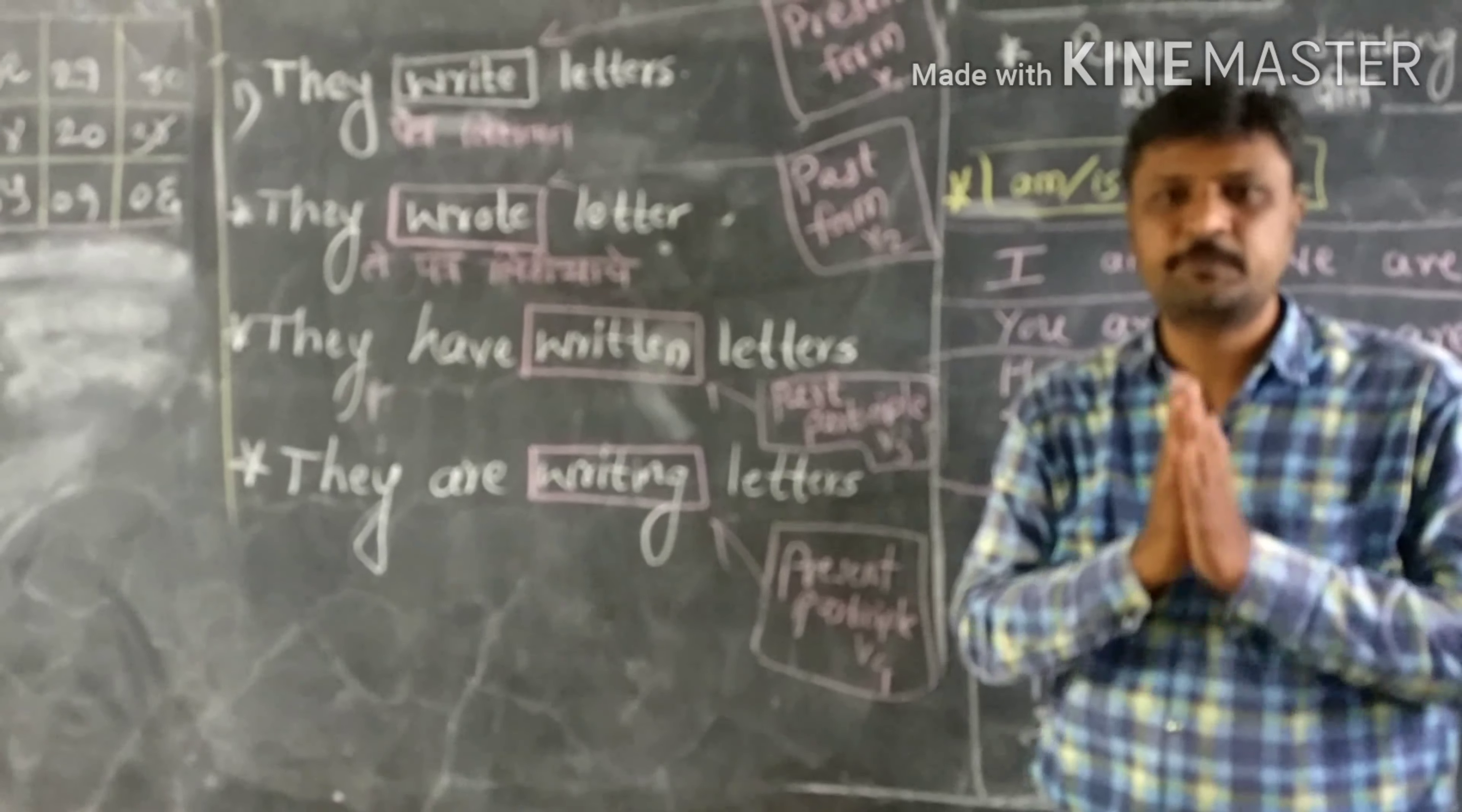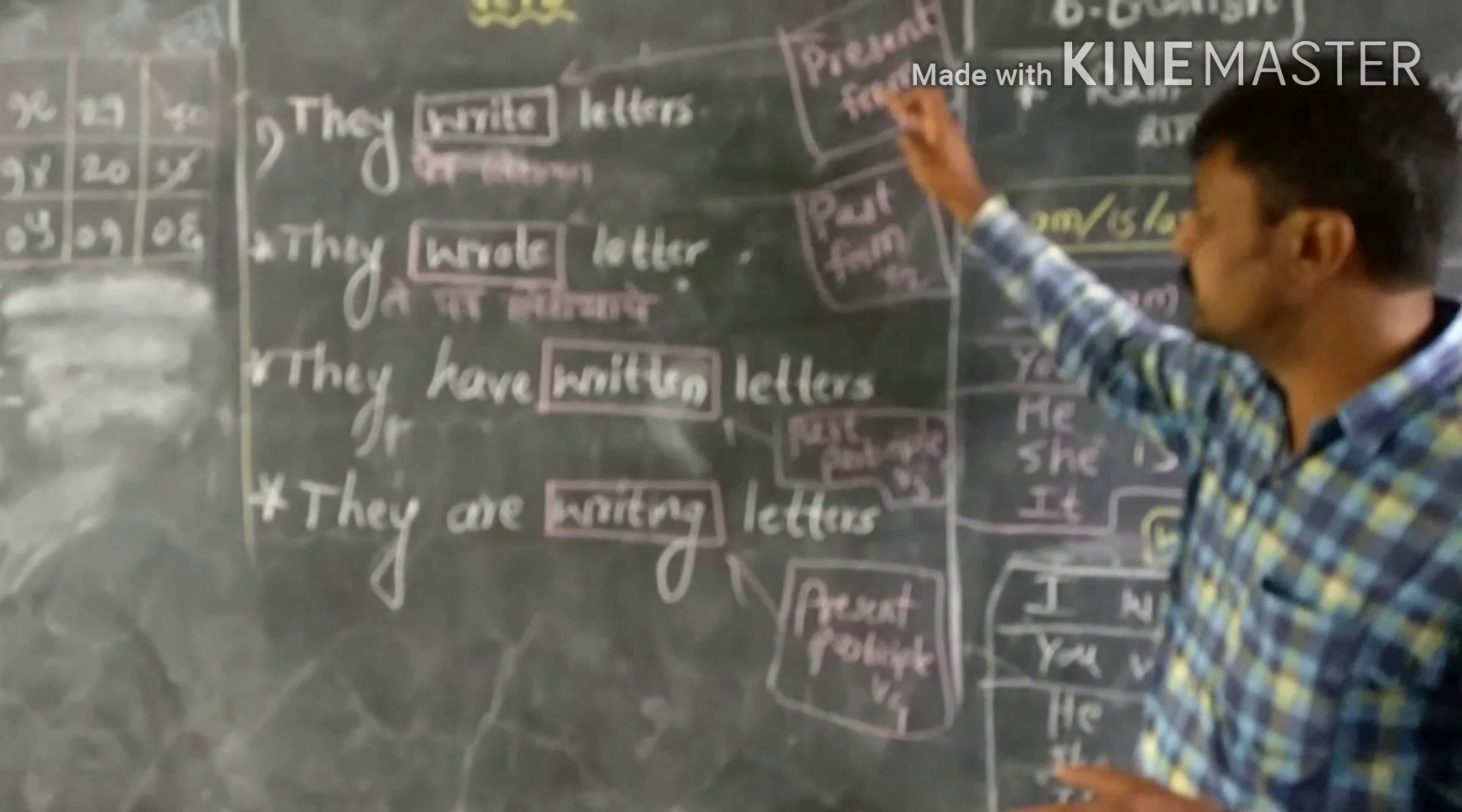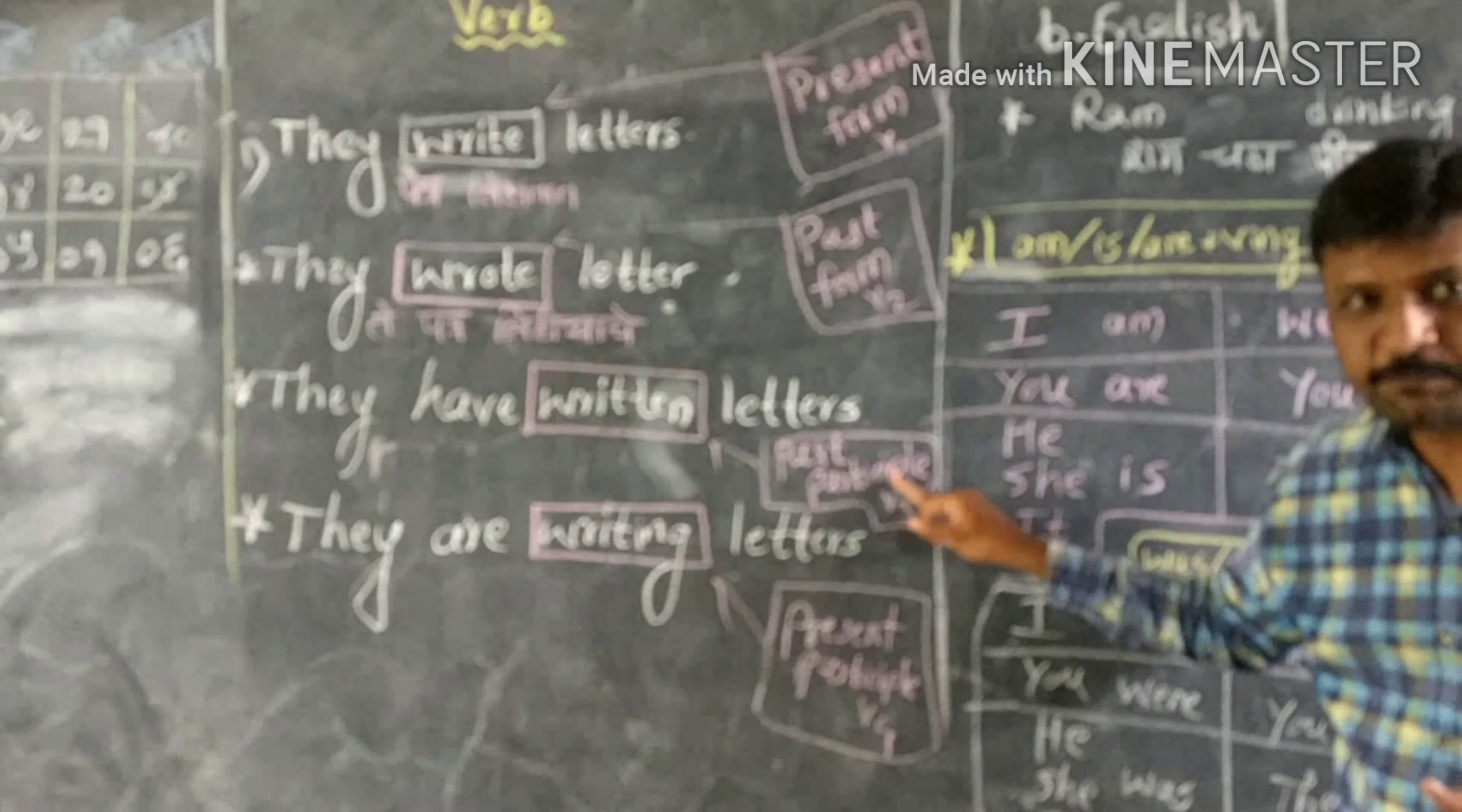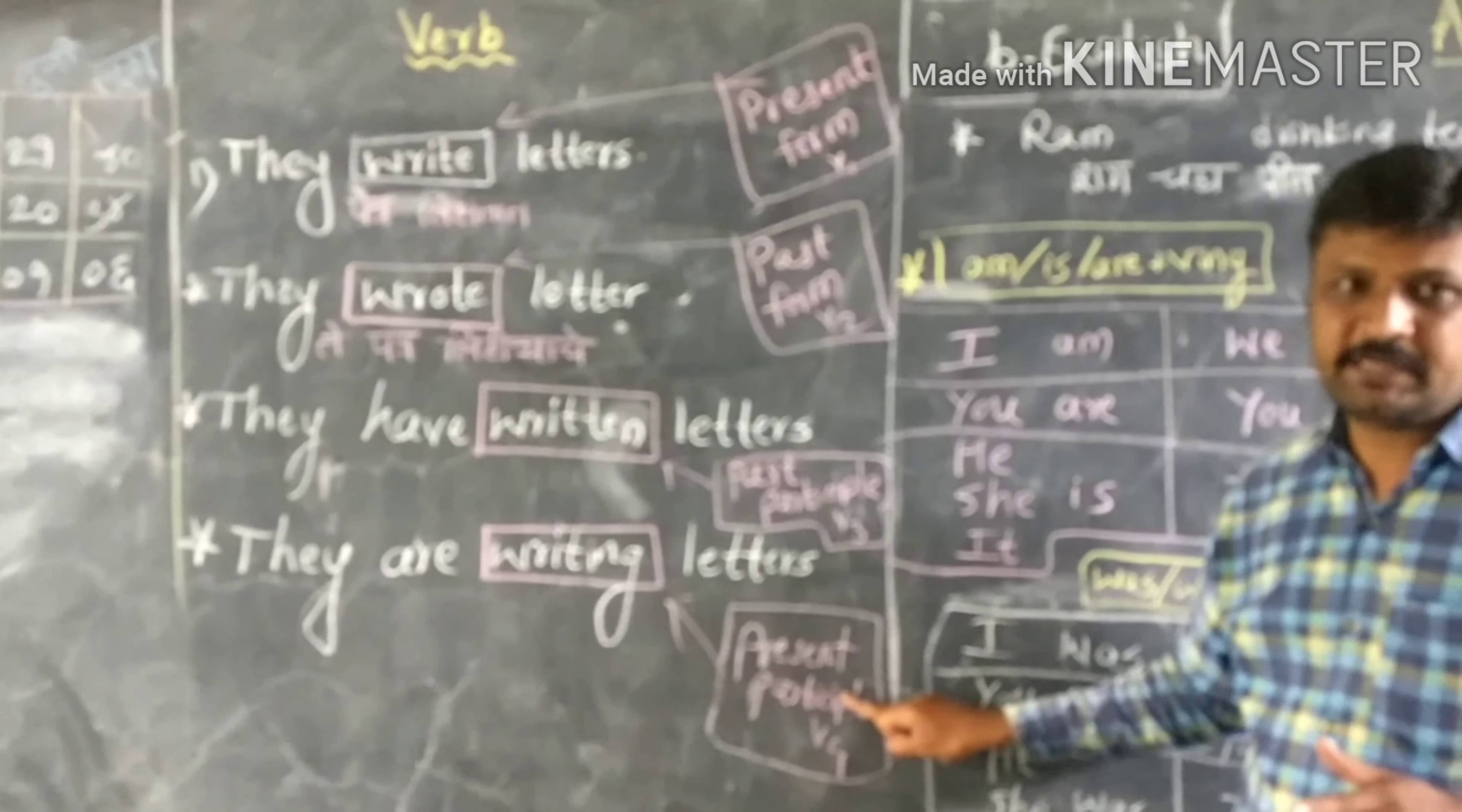Every verb has four forms: present form, past form, past participle, and present participle.